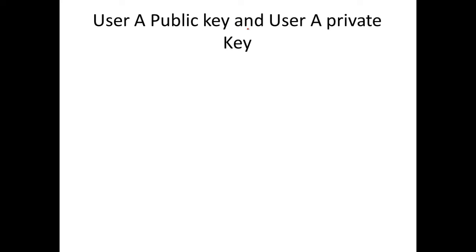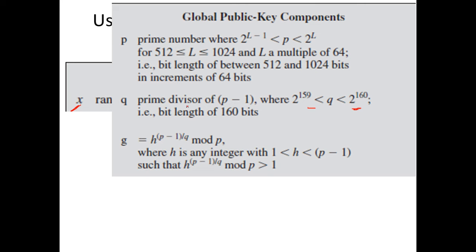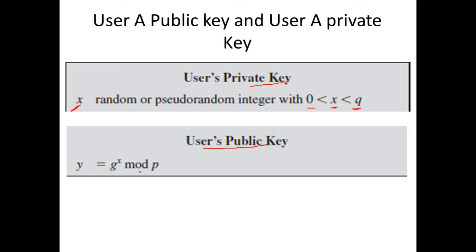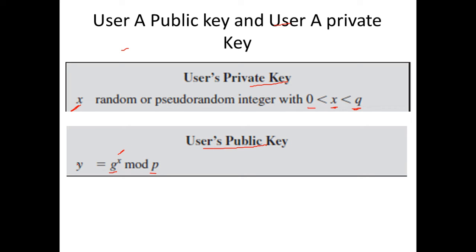Next, we identify the public and private keys. The private key X is a value selected between 0 and Q, where Q is the prime divisor of P minus 1. The public key Y is computed as G^X mod P, using the private key X along with global components G and P. The global public key components are P, Q, G; the user's public key is Y and private key is X.